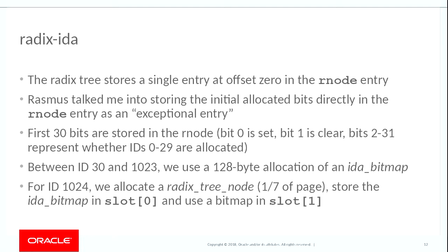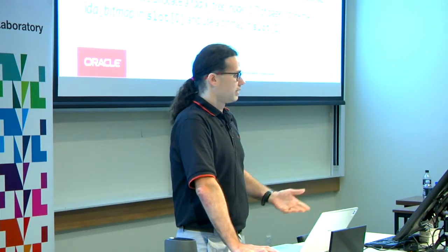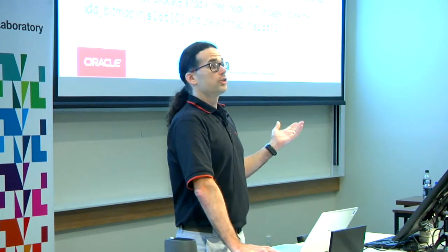As of 4.11 we had the radix tree-based IDA. This works by storing the initially allocated bits directly in the root of the tree as what the radix tree calls an exceptional entry. The upshot is that the first 30 bits mean you don't need to do any allocations whatsoever — it's all stored in the eight bytes allocated in your internal data structure. So the first 30 bits are free.